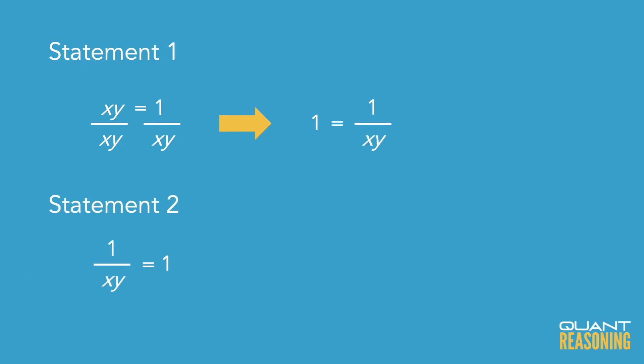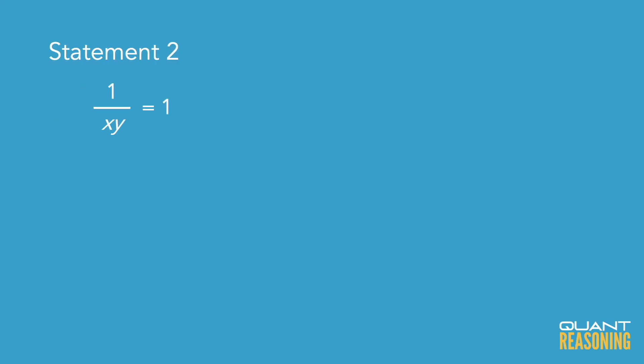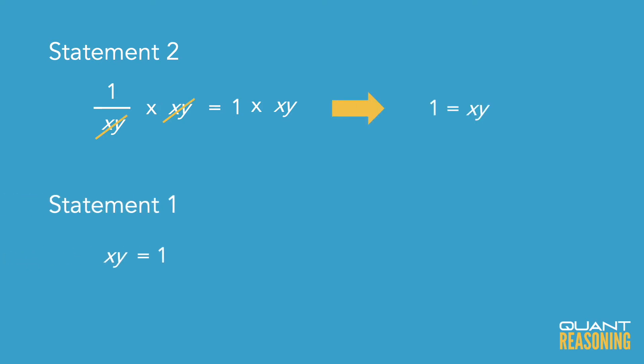And vice versa, if I know statement two, I can infer statement one by multiplying both sides by XY. So these statements are exactly equivalent — one implies the other and vice versa. And that means that I can eliminate answer choices A, B, and C without even looking at the question.